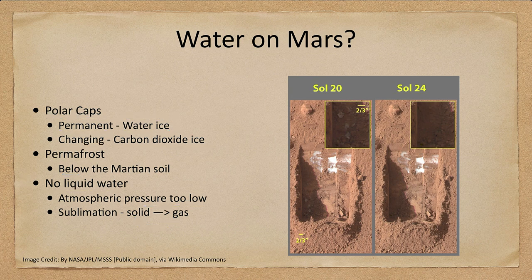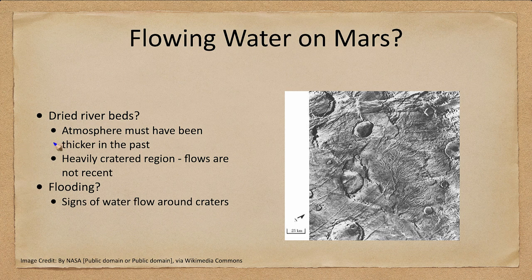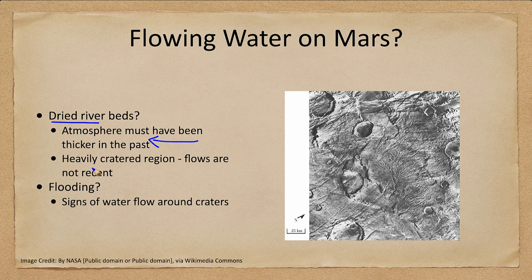How about flowing water on Mars in the past? There is evidence of flowing water — we can see things like dried riverbeds. This tells us that the atmosphere must have been thicker in the past. We see areas with very distinct features that are water-related, though they are heavily cratered, meaning these flows are very definitely not recent.